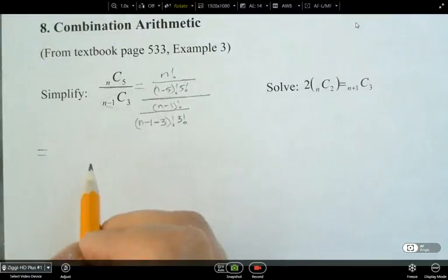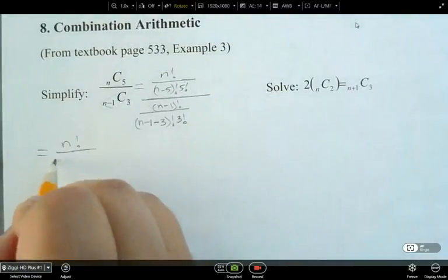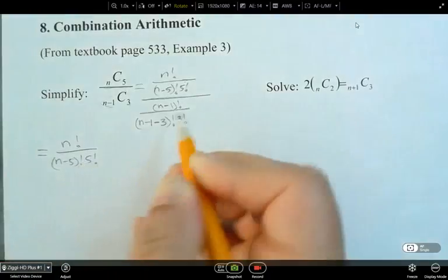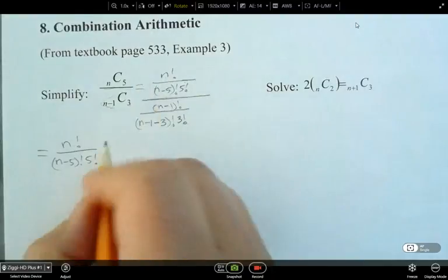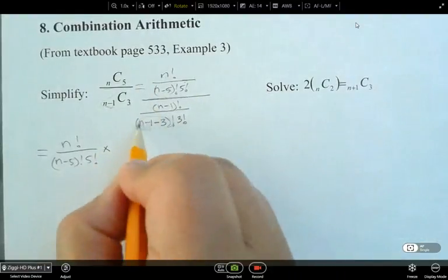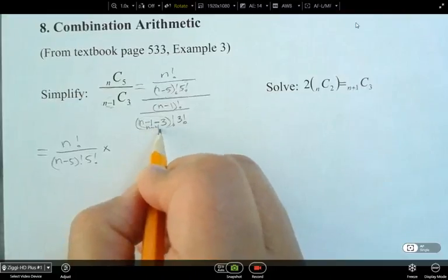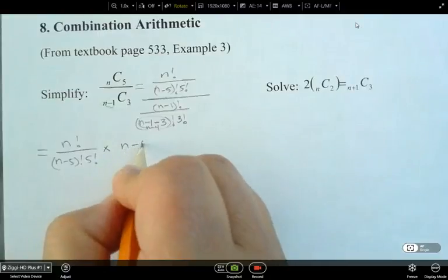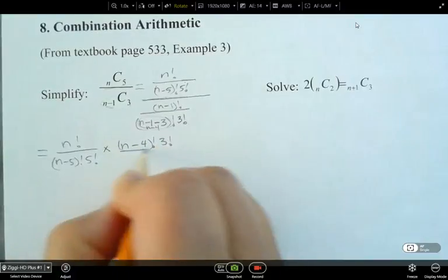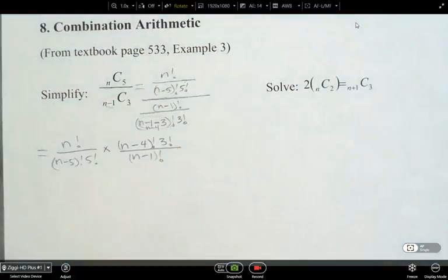Now let's simplify it in the next line. So n factorial over n minus 5 factorial, 5 factorial. And then when we're dividing, we can multiply by the reciprocal. So at the same time, is it okay if I change this to n minus 4? So we'll call this n minus 4 in here. So that's n minus 4 factorial, 3 factorial there, and then n minus 1 factorial.